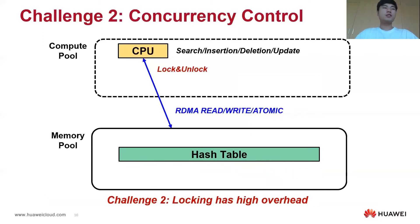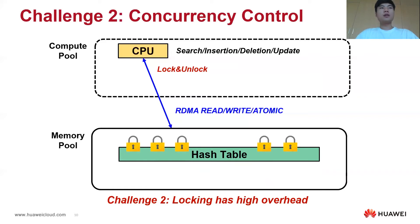The second challenge is remote concurrency control. To support concurrency control, lock-based techniques are widely used. However, in disaggregated memory, each locking or unlocking operation produces one RDMA RTT. Especially for hash indexes with many data movements, it needs to acquire many locks, significantly decreasing performance.